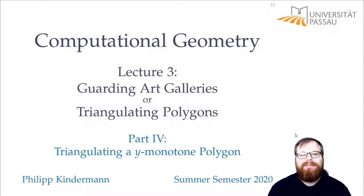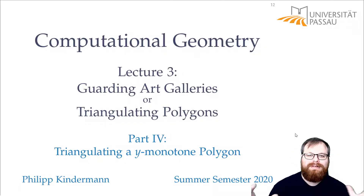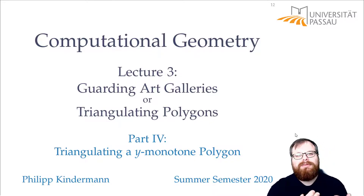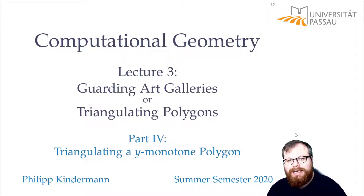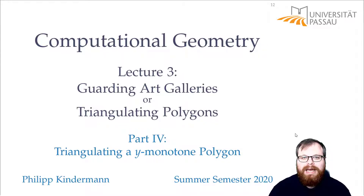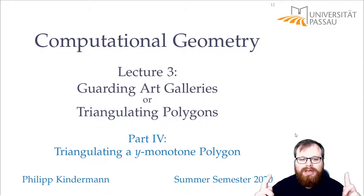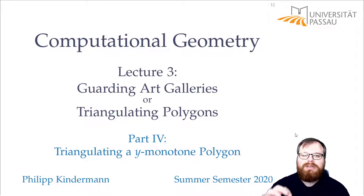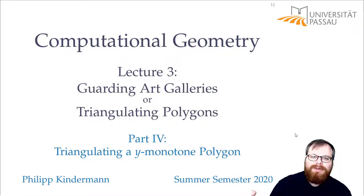In this part we will deal with the remaining part of our algorithm. We know, given a simple polygon, how to partition it into y-monotone pieces. And we know, given a triangulation, how to solve the art gallery problem with at most n over 3 cameras, which is worst-case optimal. So the only missing step is how to get from a y-monotone polygon to a triangulation.